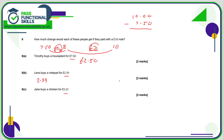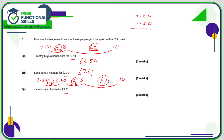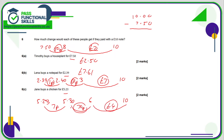For £2.39: step from £2.39 to £2.40 (difference of 1p), then to £3.00 (60p), then to £10 (£7). Overall difference: £7.61. For £5.23: step from £5.23 to £5.30 (7p), then to £6.00 (70p), then to £10 (£4). Total change: £4 plus 70p plus 7p — that's £4.77.